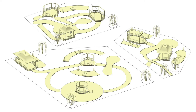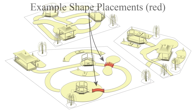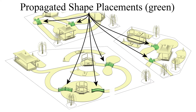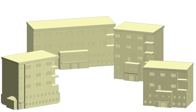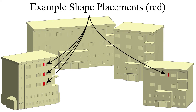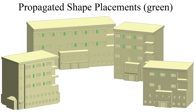We present a method to learn and propagate shape placements from a few examples provided by a user. Shapes are placed in two-dimensional scenes or on planar surfaces of three-dimensional scenes, such as the ground plane in this example. We can then find placements that are similar to the given examples. Our similarity metric is based on relations of the placed shapes to the surrounding geometry.